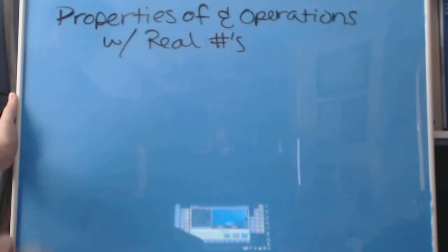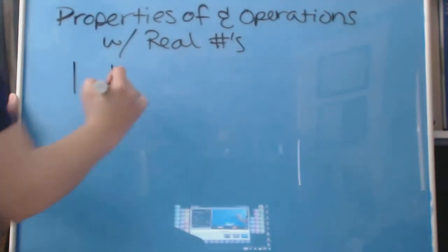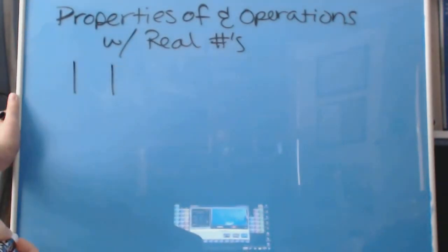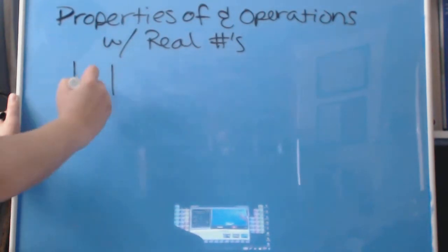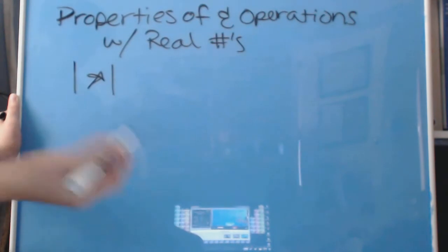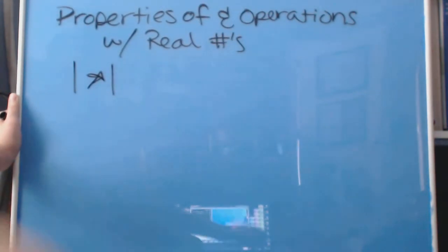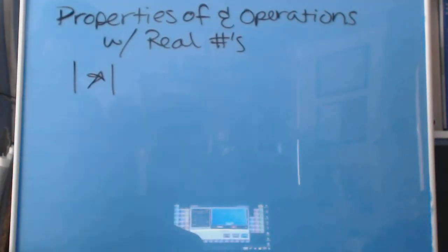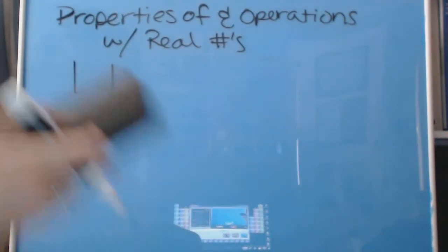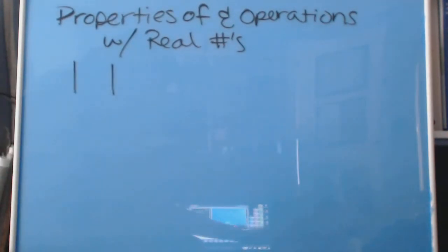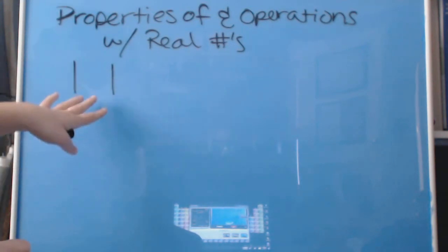How we write an absolute value is we have two straight lines, one on either side, and we have a number or a term inside — whatever you want in there. Anything inside those lines will be positive, regardless of what's inside.